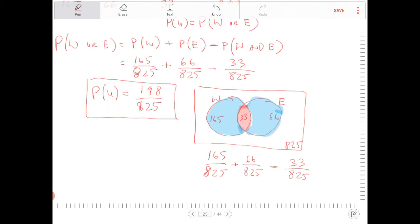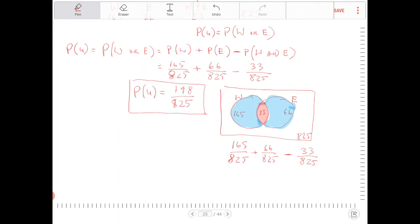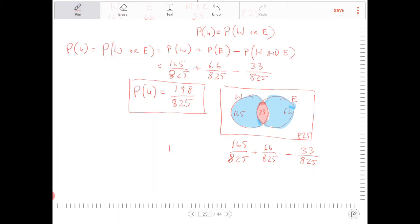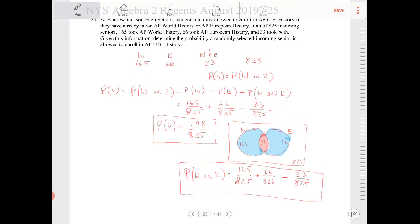So that's the area that we have to subtract out, and the result of that will be the probability of W or E. So this is W or E. Again, because there is that overlap, there is that condition that we have to take into consideration.